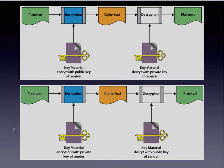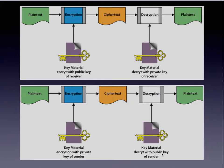In the other example, the person who owns the keys uses her private key to send encrypted information — which could be a digital signature — to a receiver. Since only the person with the private key should be the only person in the world with that private key, it helps the receiver to authenticate the sender. The plain text is encrypted with the private key, sent to the receiver, and the receiver uses the sender's public key to decrypt the information.